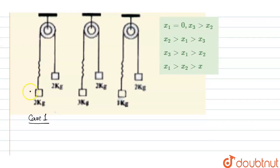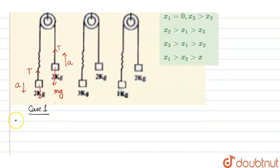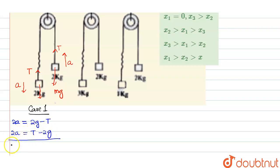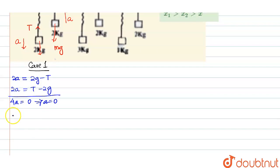Let's come to Case 1. Let us consider the left side block is moving downward with acceleration a, hence the right side block moves upward with the same acceleration a. Let the tension on the string be T. Gravitational force mg acts downward on both blocks. From the free body diagram of the left side block: 2a = 2g - T. From the right side block: 2a = T - 2g. Adding both equations: 4a = 0, which implies a = 0. Putting a = 0 into one equation, we get T = 2g.